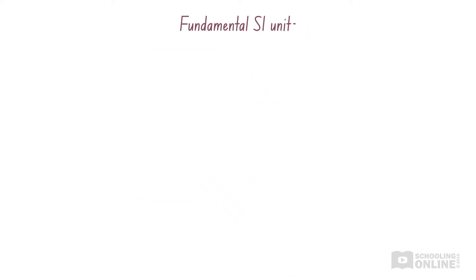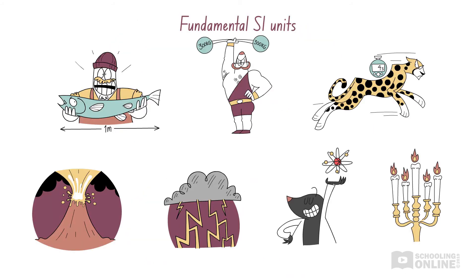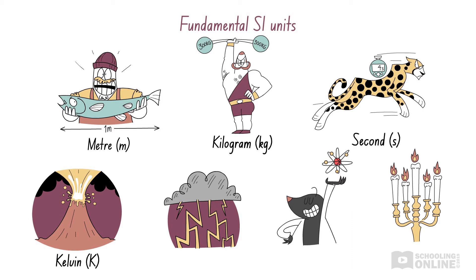The SI unit system is built upon seven fundamental units. They are the metre for length, the kilogram for mass, the second for time, and the kelvin for temperature.